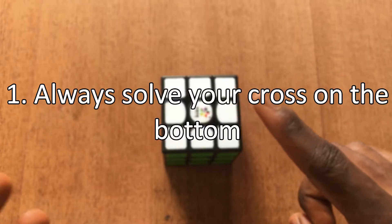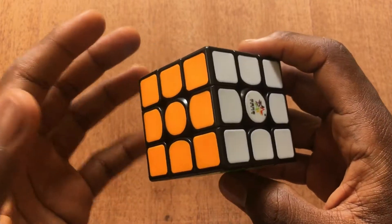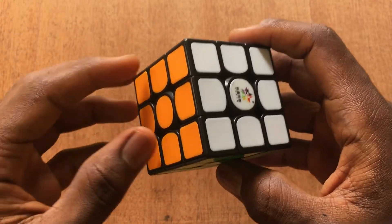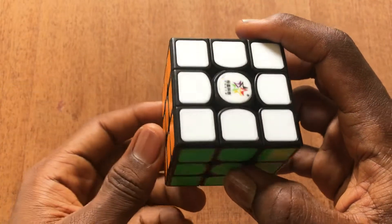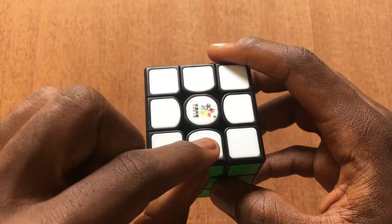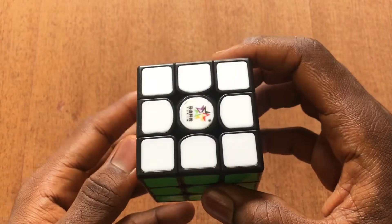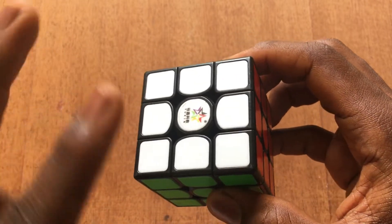Tip number 1: always solve your cross on the bottom. Now when I was still a beginner at speedcubing and I decided to learn the advanced cross techniques, I heard this tip and I thought it was not very helpful because I was thinking, how will I be able to see my cross pieces as I'm solving? But as I started doing the tip, I noticed it was very good because of two reasons.